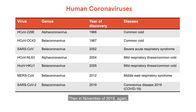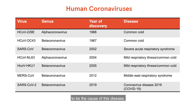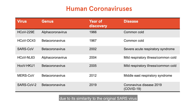Then in November of 2019, again there was a novel outbreak of pneumonia amongst patients in the Hubei province of China. And again, a coronavirus was attributed to be the cause of this disease. This was termed SARS coronavirus 2, due to its similarity to the original SARS virus, and the disease has now been termed coronavirus disease 19.